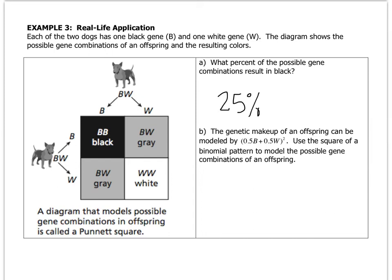The genetic makeup of an offspring can be modeled by this polynomial. Use the square of a binomial pattern to model the possible combinations of an offspring. So I'm going to use the technique of squaring a binomial that we just practiced. So here's the binomial.